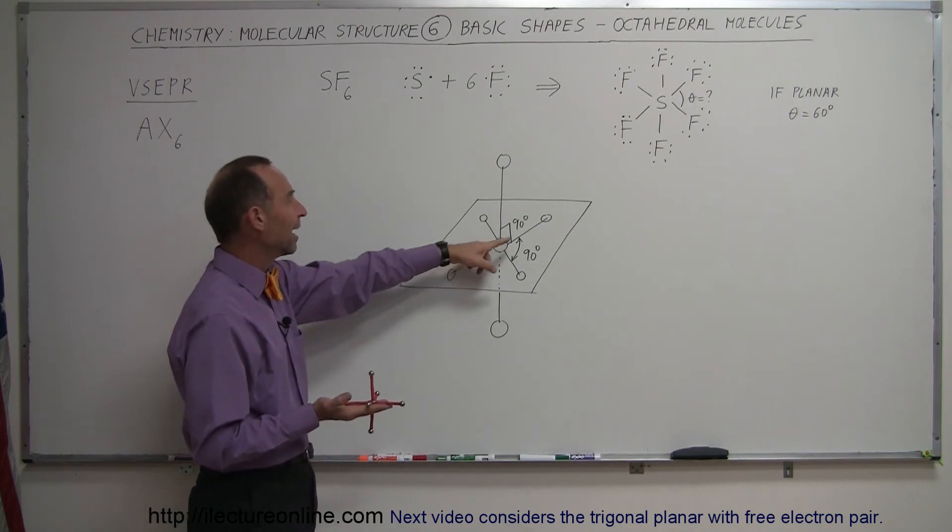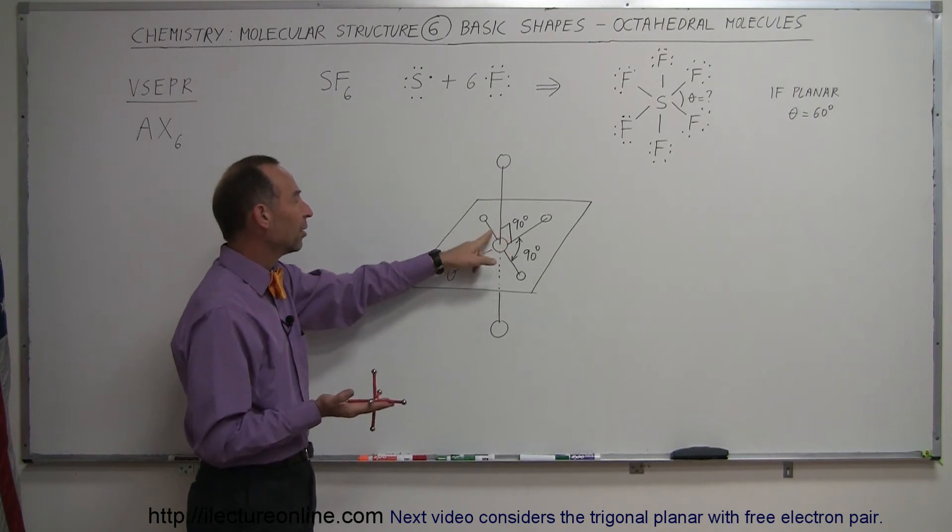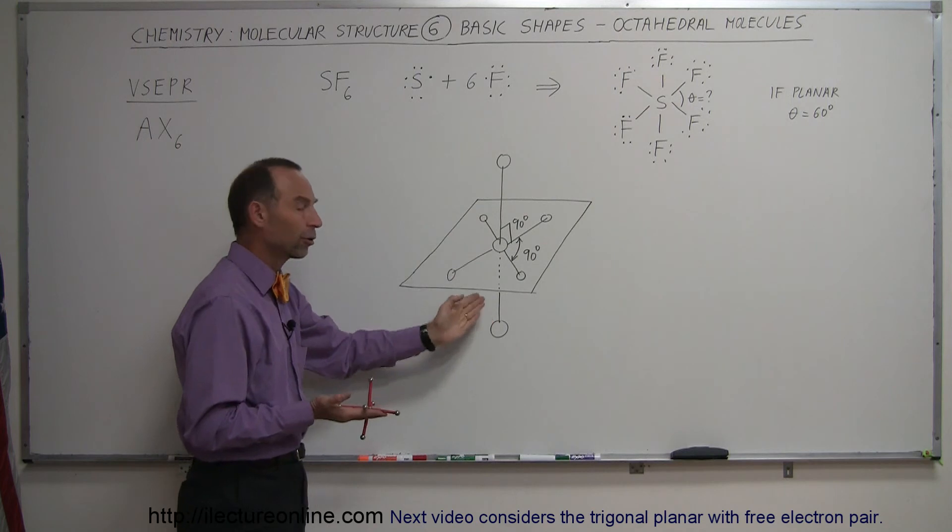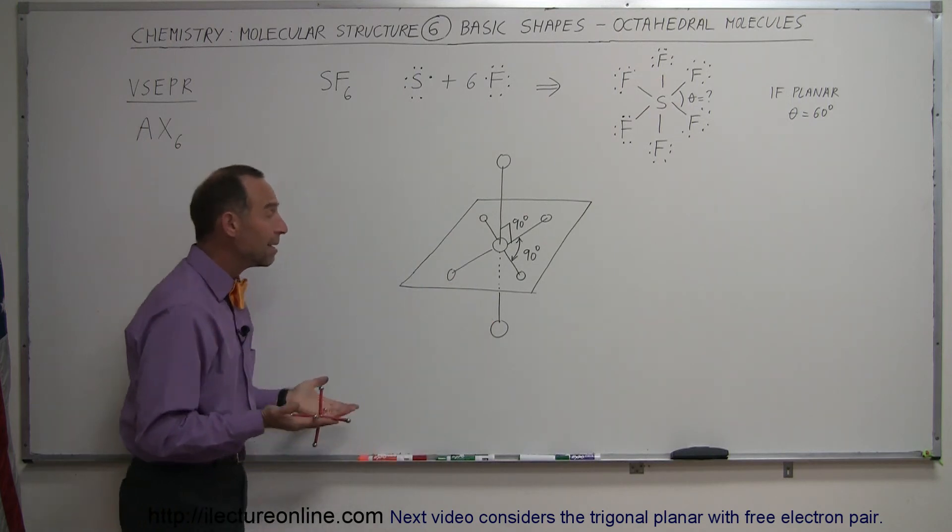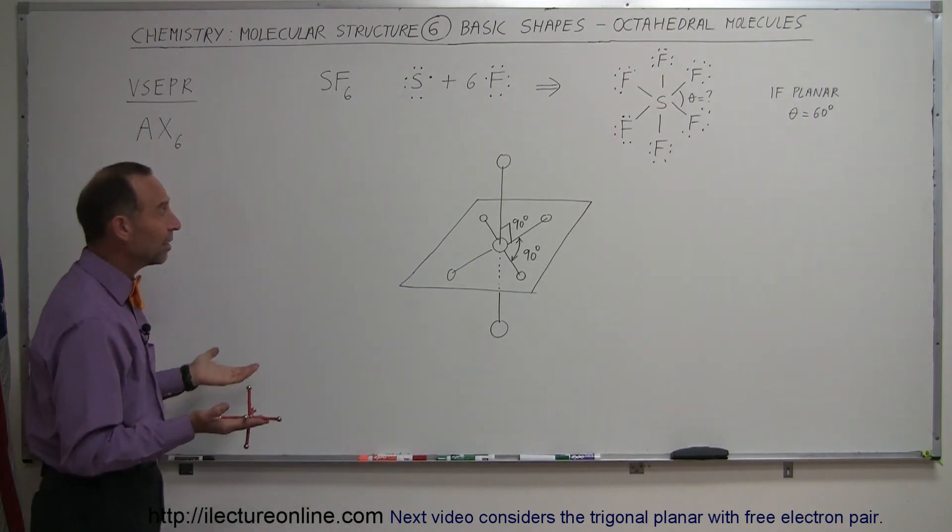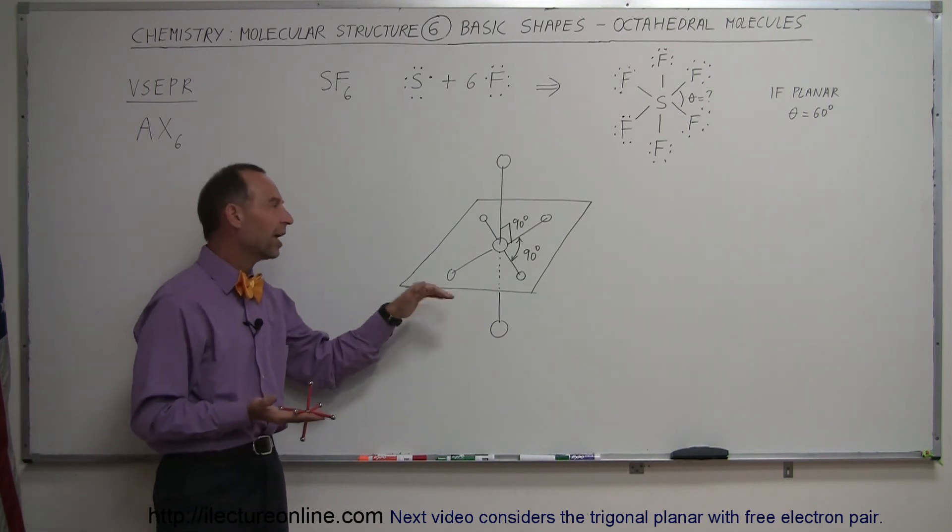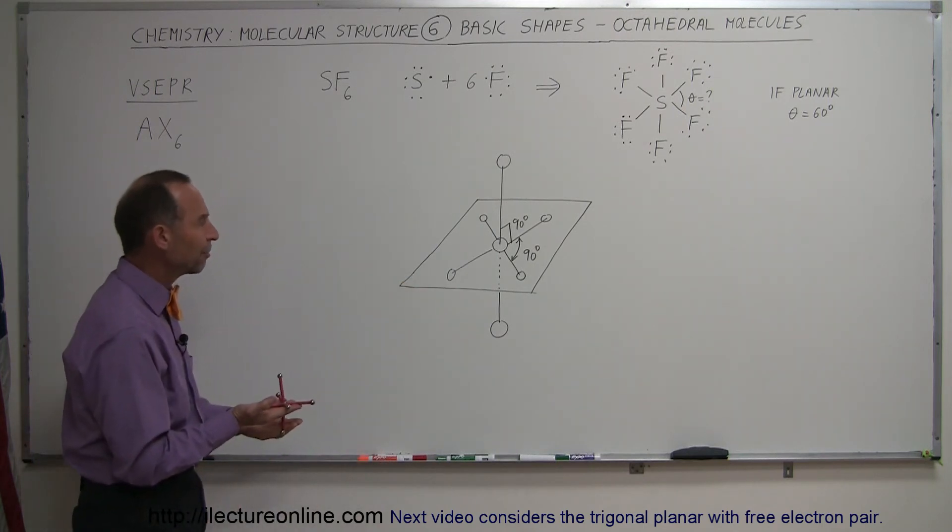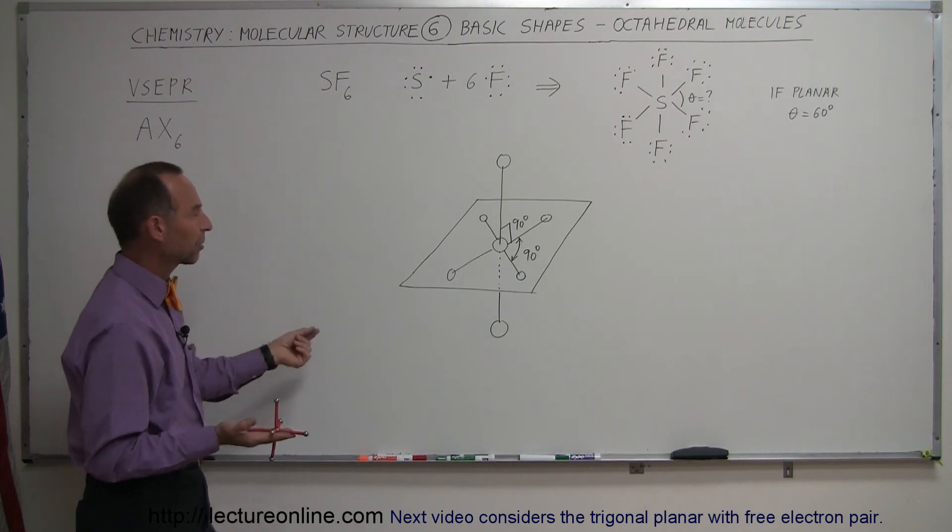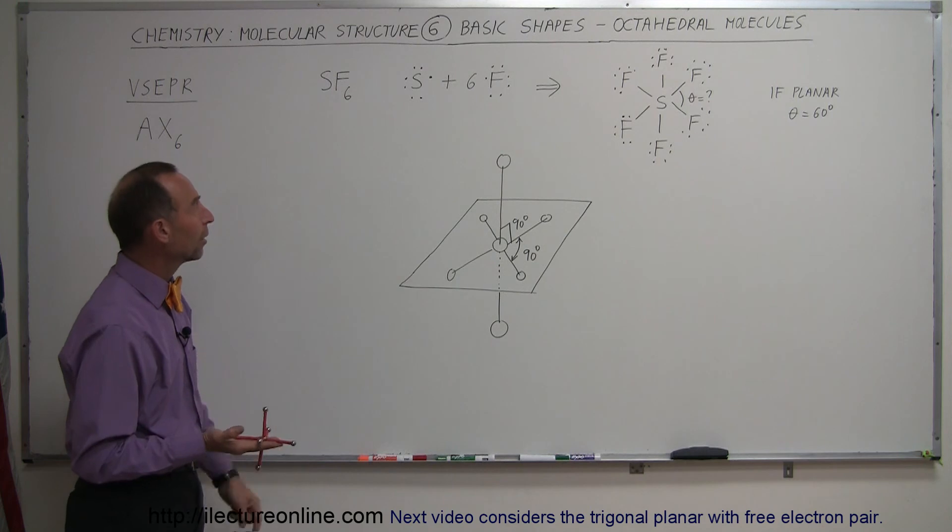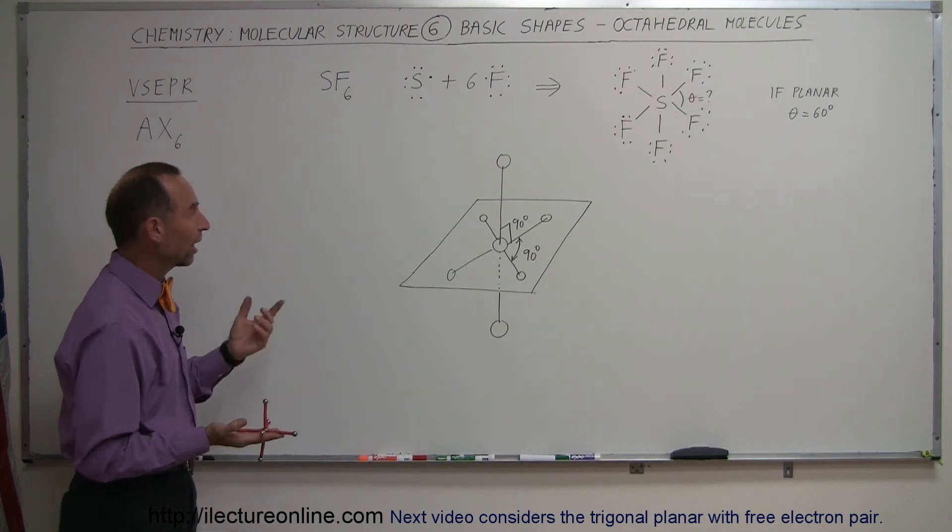In this particular shape, you can see that every angle between every bond is 90 degrees. So it's 90 degrees in the plane. It's 90 degrees from the plane to the vertical up and the vertical down. So that would be the best, least energy intensive, or I should say the lowest energy state this molecule can take by having the farthest distance away from the electrons that are occupied in the bonds between the sulfur and the fluorine. So that's what we call an octahedral molecule.